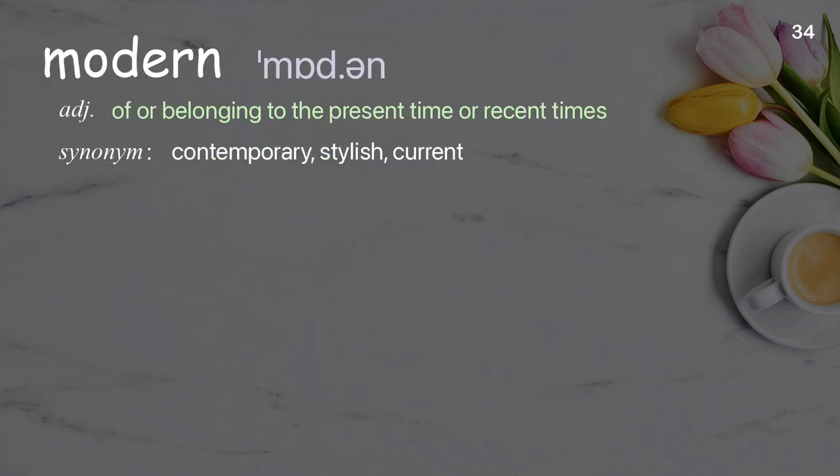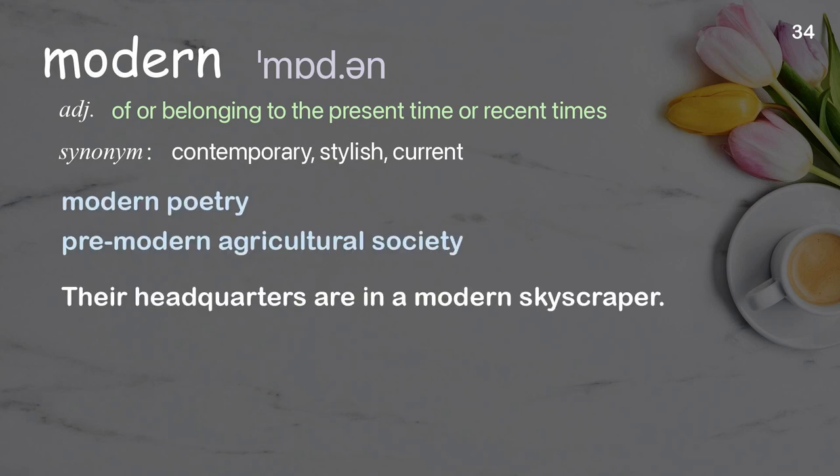Modern: of or belonging to the present time or recent times. Examples: modern poetry, pre-modern agricultural society. Their headquarters are in a modern skyscraper.